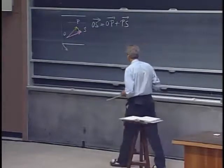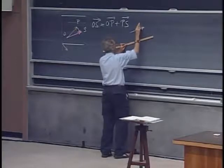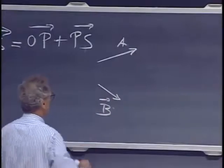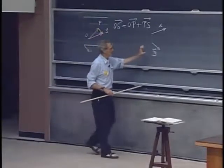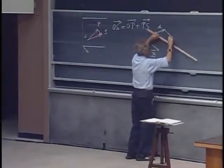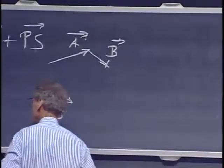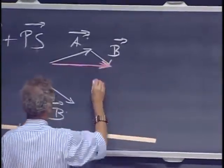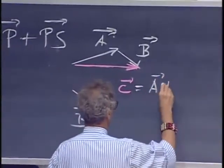There are various ways that you can add vectors. Suppose I have here a vector A and I have here a vector B. Then you can do it this way, which I call the head-tail technique. I take B and I bring it to the head of A. So this is B. This is a vector. And then the net result is A plus B. This vector C equals A plus B.